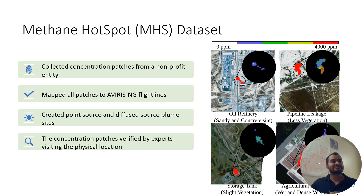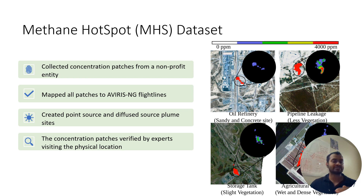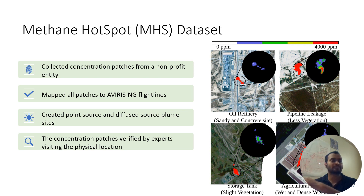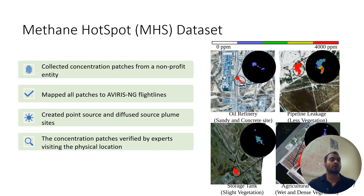To address these limitations, we curated the largest hyperspectral dataset called the methane hotspot dataset, which constitutes a binary segmentation mask as ground truth for methane, along with a concentration mask, which provides the amount of methane available on each particular pixel in the spatial domain. We map all the concentration masks to the average energy flight lines. We have provided more details in our supplementary materials on how we did that.